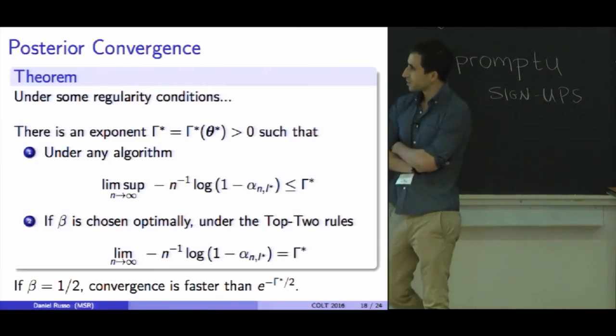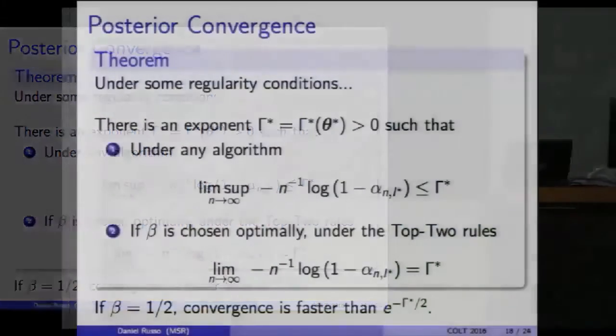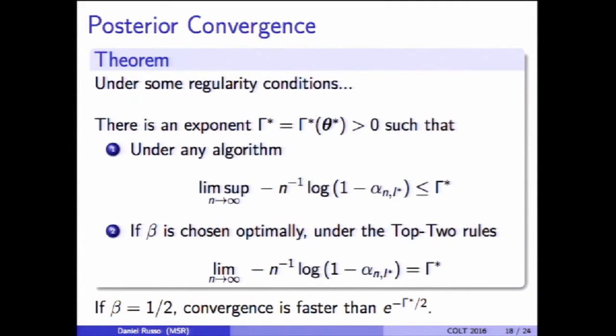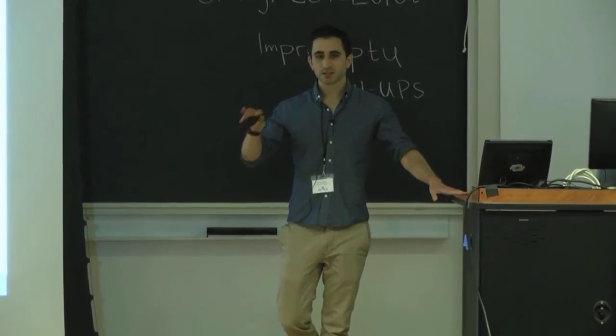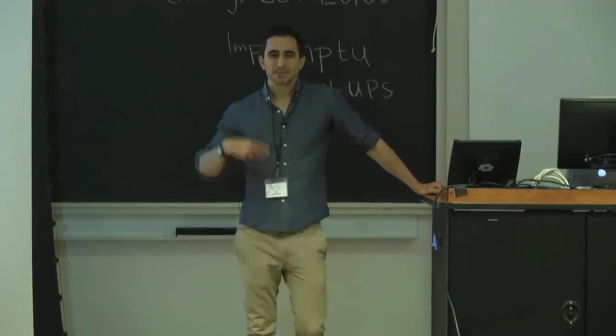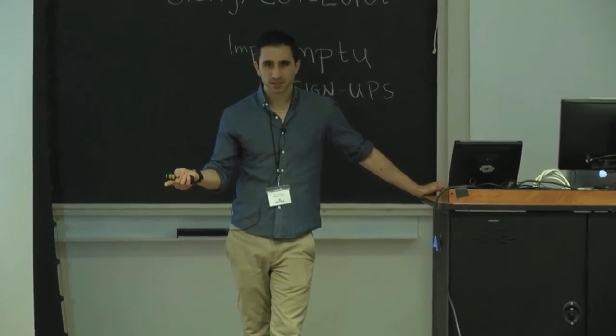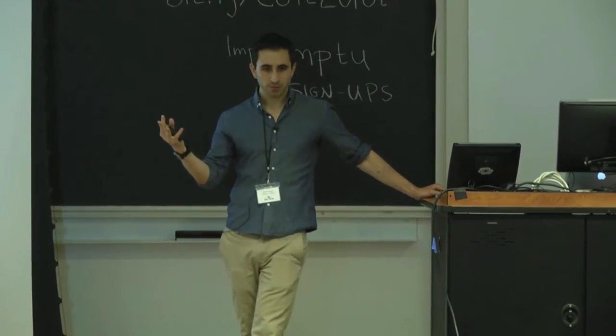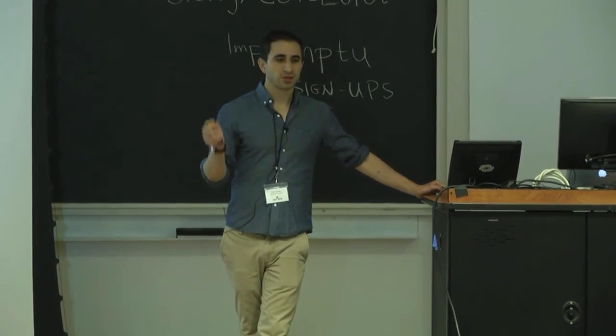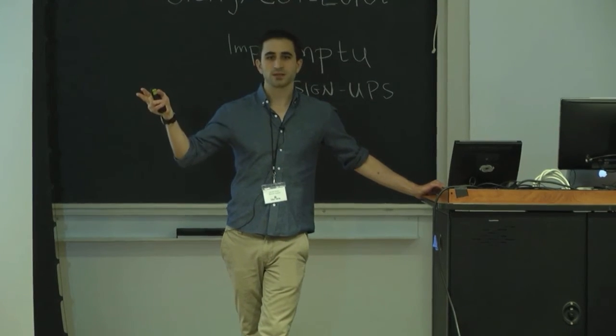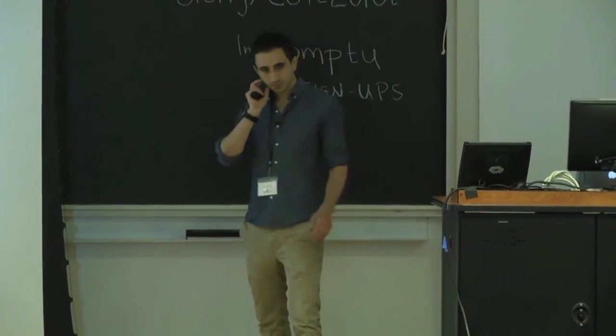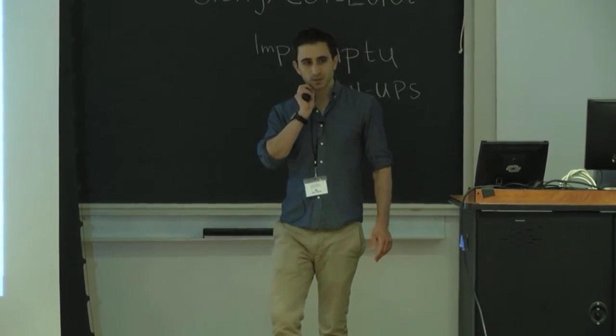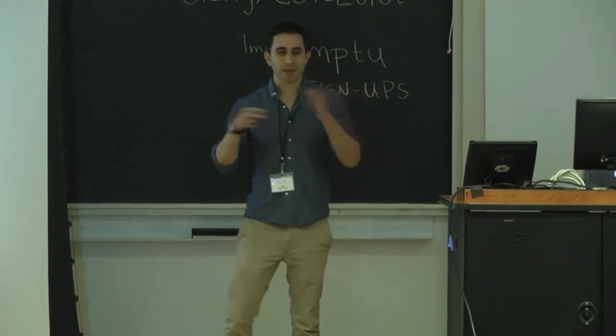A more formal theorem essentially says that under some regularity conditions, we get the following large deviations result. The question was whether we're in a Bayesian setting or a frequentist setting. I'm going to assume some grain of truth style prior here and show that under any fixed vector of qualities, the posterior converges on the truth at the fastest possible rate. For any fixed θ vector, there is an exponent γ* under which no algorithm could converge at rate faster than e^{-nγ*}.